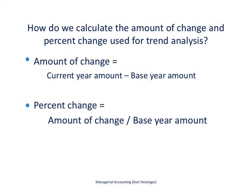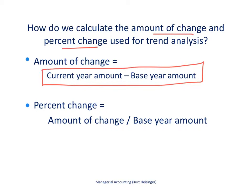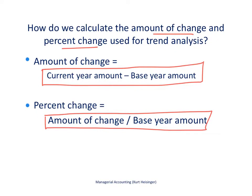The first step is to understand how to calculate the amount of change and the percent change. The first equation determines the amount of change: it's the current year amount — the most current year — minus the base year amount. Then, once we have that, we find the percent change by using the amount of change in the numerator and dividing that by the base year amount.